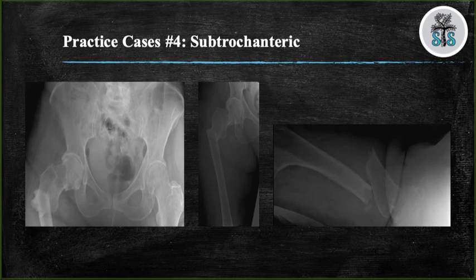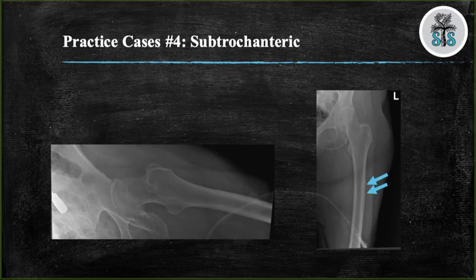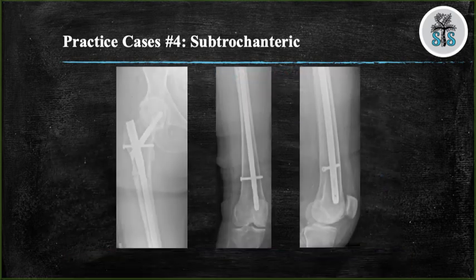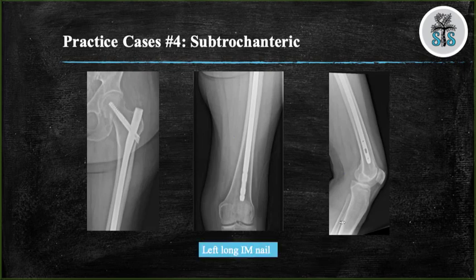Last case — we have three views: AP pelvis, AP right hip, and cross table lateral of a right hip, demonstrating a right transverse subtrochanteric fracture with varus angulation. This fracture pattern should alert you to the possibility of being pathologic — the fracture is transverse in orientation and there is minimal to no comminution. Contralateral femur films revealed two lateral cortical thickenings along the lateral aspect of the proximal femur. The right subtrochanteric fracture was treated with a long nail with one screw locked distally. The left femur was prophylactically nailed and was not locked distally.